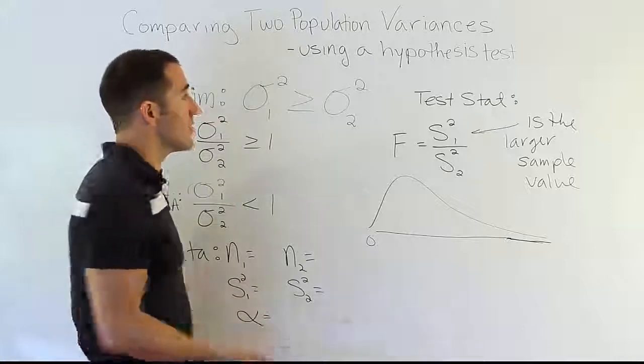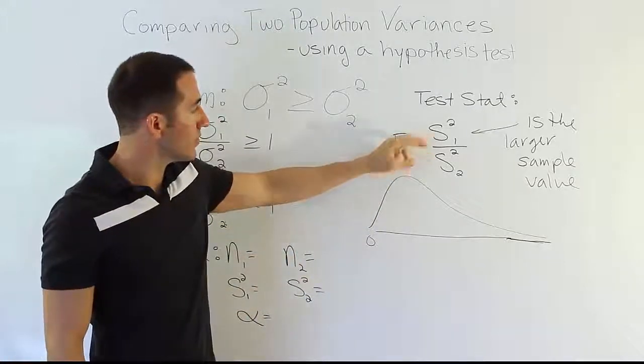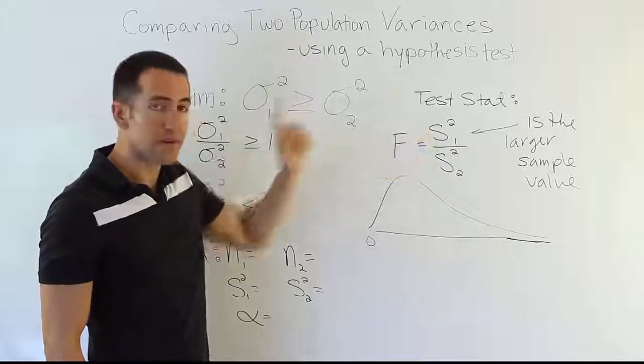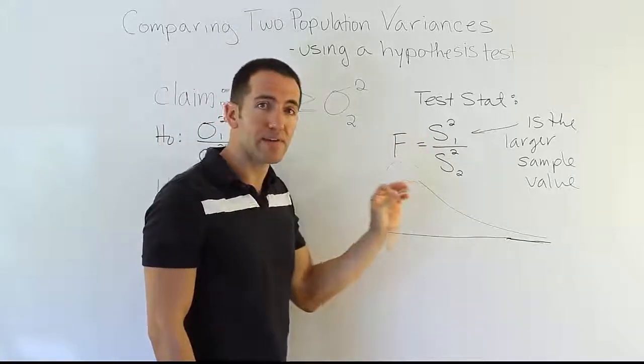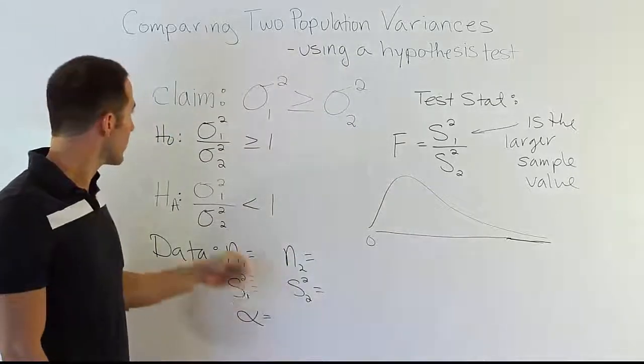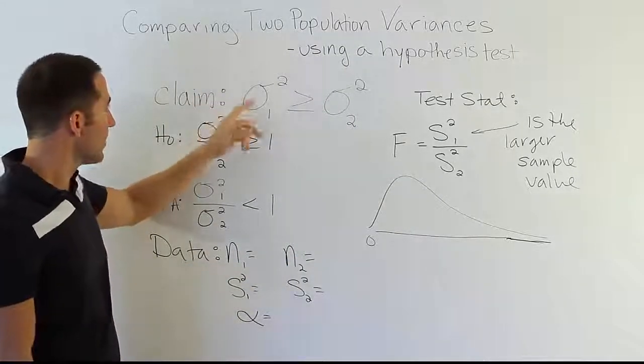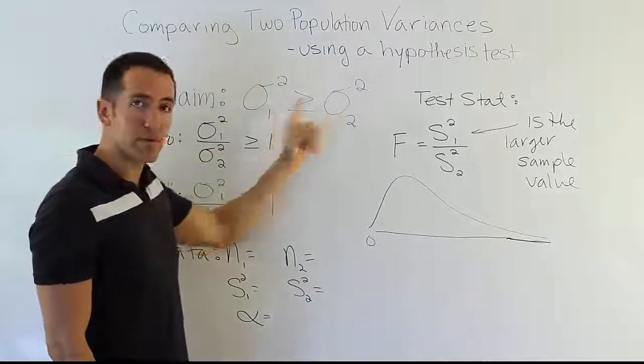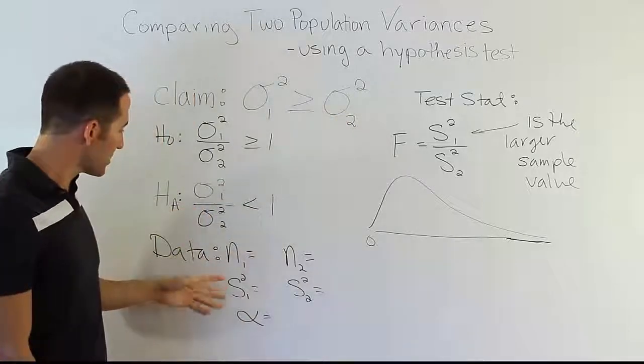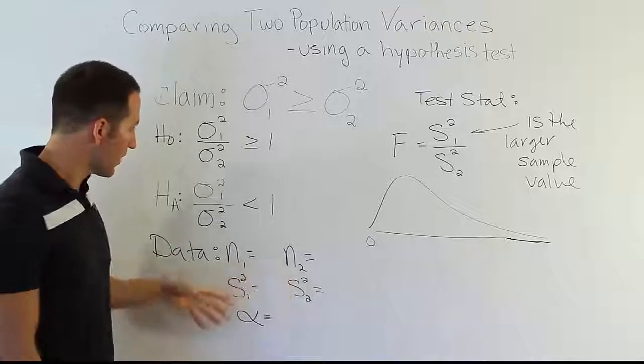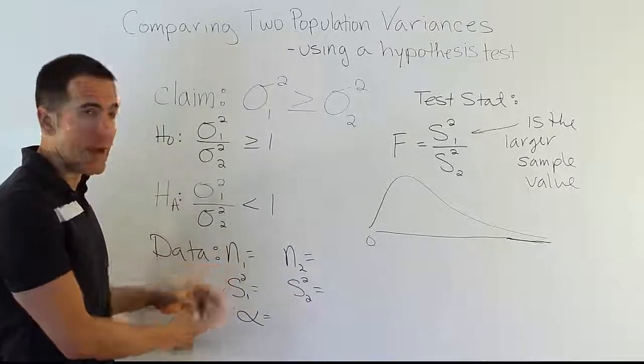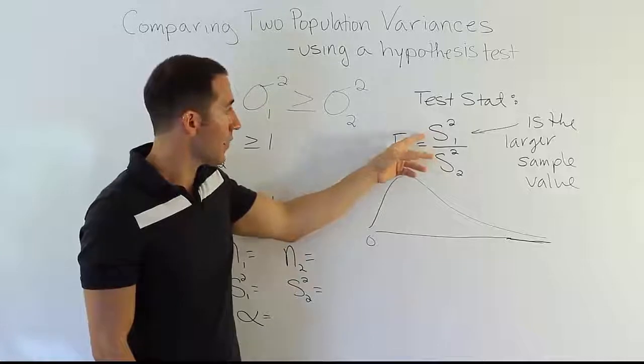In fact, it's probably the easiest test stat formula we've seen. You just divide the two sample variances with a very important rule that you put the larger sample variance on top in every case. So when you do the problem here, you notice that according to this claim, it's population 1 that's supposed to be greater than population 2. So we're assuming here that the sample variance here is greater than that one. Of course, we want to confirm that by actually looking at the data when we have it. And then we form the ratio in that way.